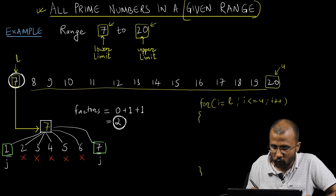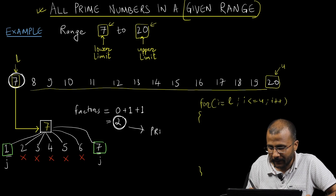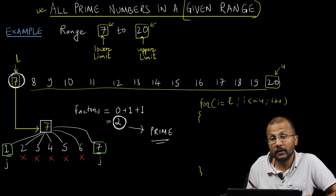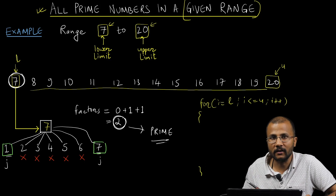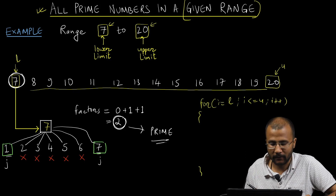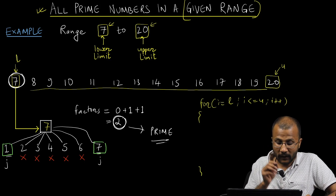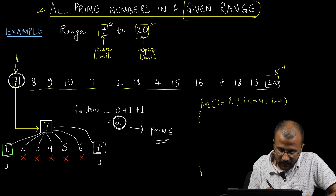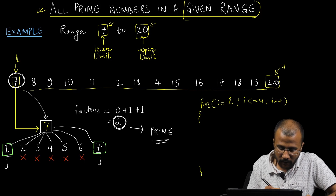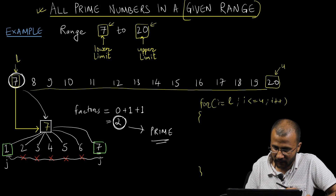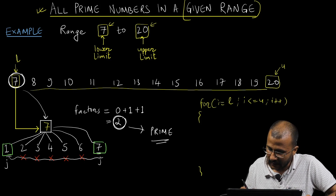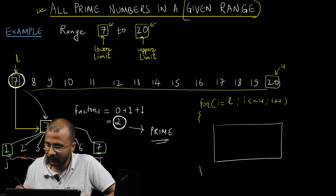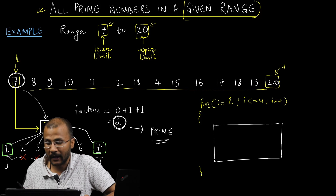Whenever the number of factors is exactly 2, I say that number is prime. And whenever I find more than 2 factors, that is a non-prime number. So to check whether 7 is prime or not, I have to run a loop starting from 1 to 7. Again, inside the outer loop I have to run one more loop to check if number i is prime or not.